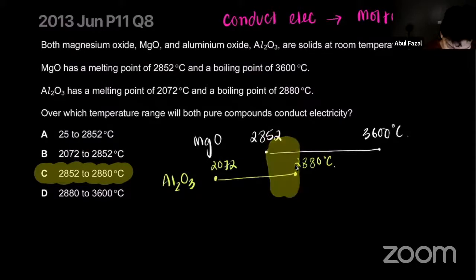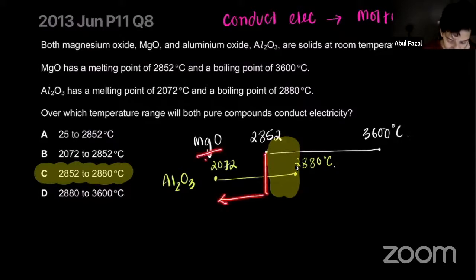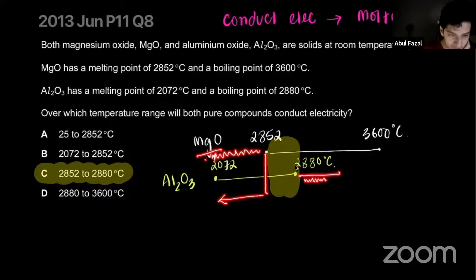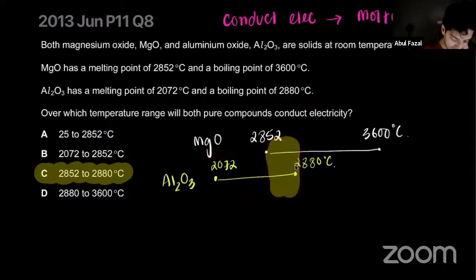Because if I keep the temperature below 2852°C, then magnesium oxide will be a solid and it won't conduct. And if I keep the temperature above 2880°C, aluminum oxide will turn into a gas and will not conduct. This is the sweet spot where both will conduct.